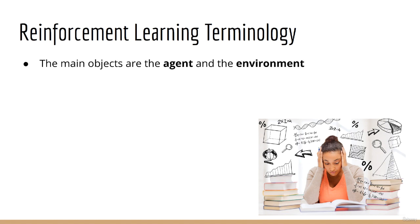Let's start with the main objects in a reinforcement learning problem, the agent and the environment. The best example of this is yourself. You are an agent, and the world is your environment.